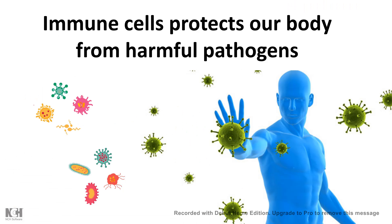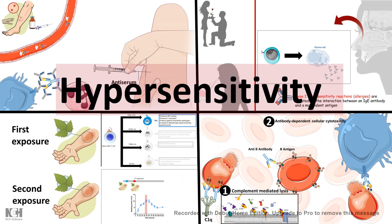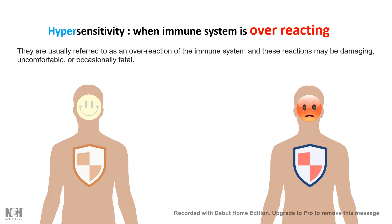We know that the immune system protects our body from all kinds of harmful pathogens and serves like a defense system for our body. But sometimes there are situations faced by our immune system known as hypersensitivity. Hypersensitivity is an overreacting situation of the immune system — our immune system becomes hypersensitive. While sensitivity is important for any physiological system to protect our body, hypersensitivity instead of being beneficial is detrimental.